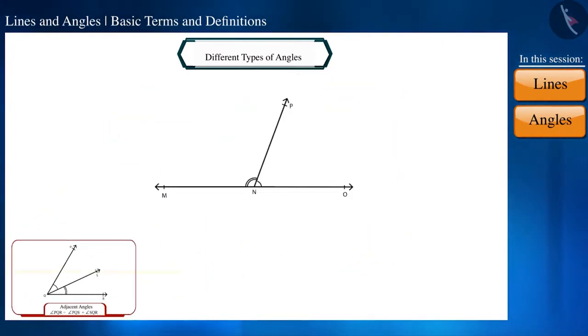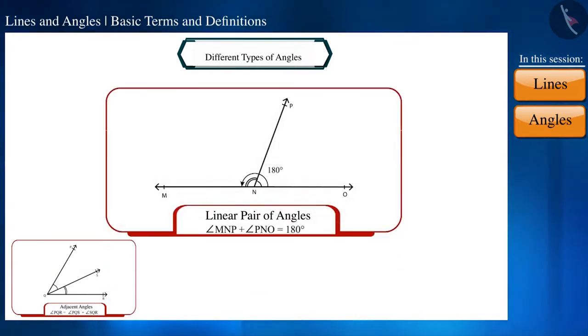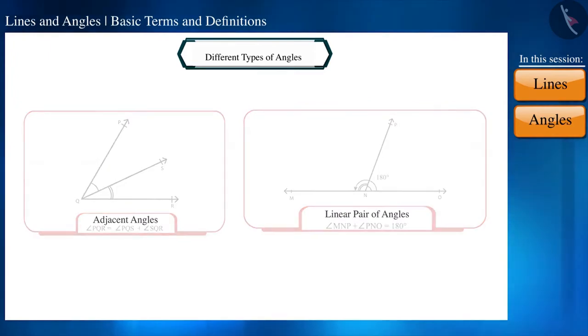Friends, look at the figure and tell if angle MNP and angle PNO are adjacent angles. Yes, the common vertex of both angles is point N, and the common arm is NP. Here the sum of these two angles is 180 degrees. In this way, a linear pair of angles is formed.